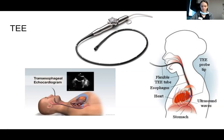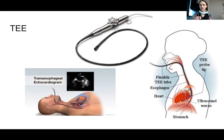Skip to TEE — transesophageal echocardiography. Anesthesia providers use this frequently for diagnosing before the case. A transducer attached to a gastroscope is introduced down into the esophagus, bringing the probe in close proximity to the heart. Because the TEE probe tip sits right next to the heart through the esophagus, they can ultrasound the heart through the esophageal wall — a very useful and interesting technique.